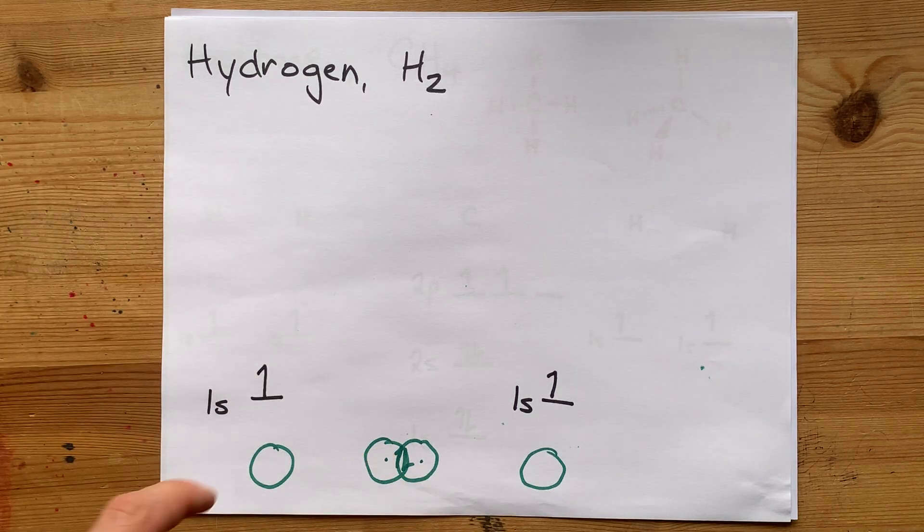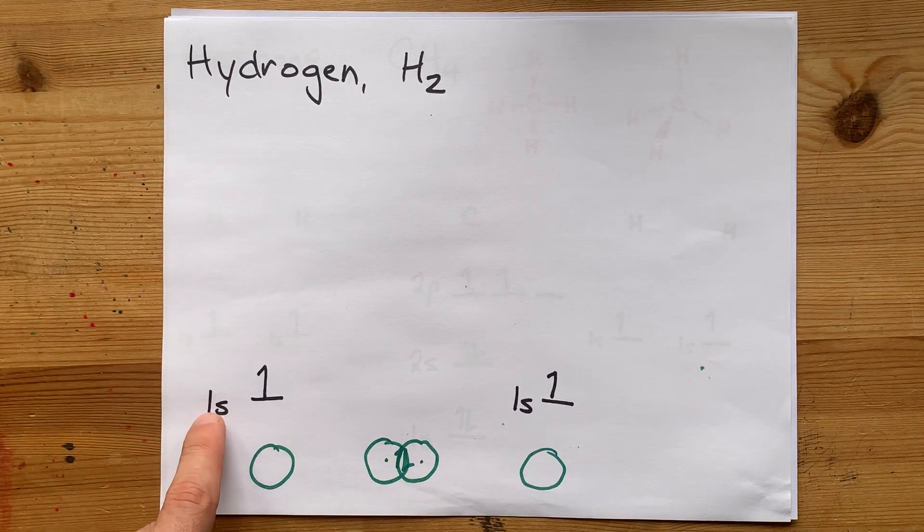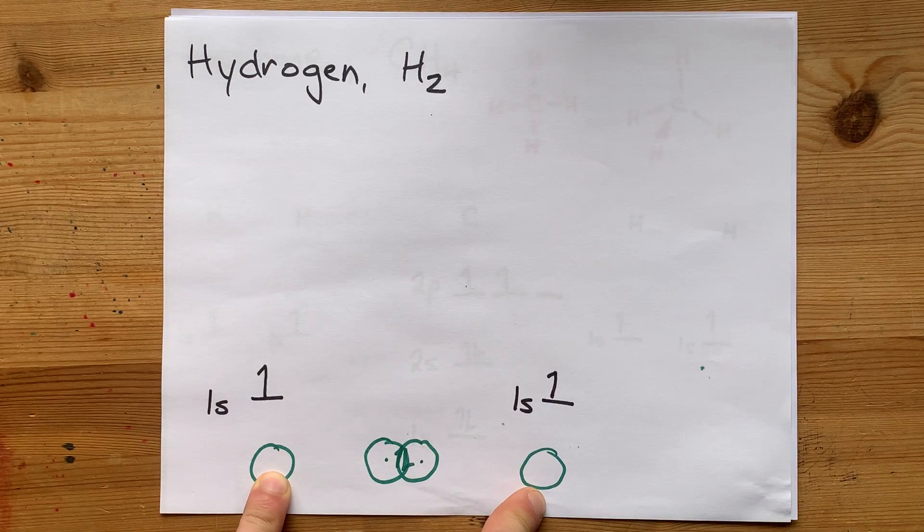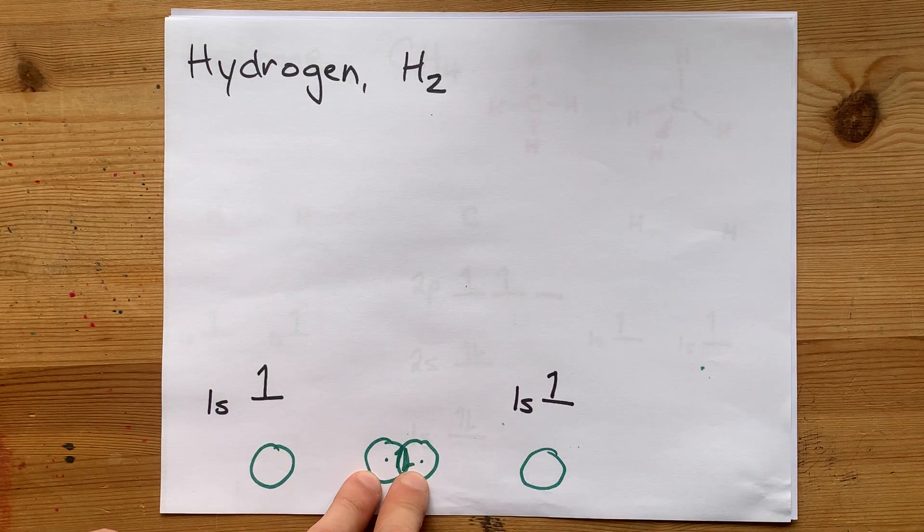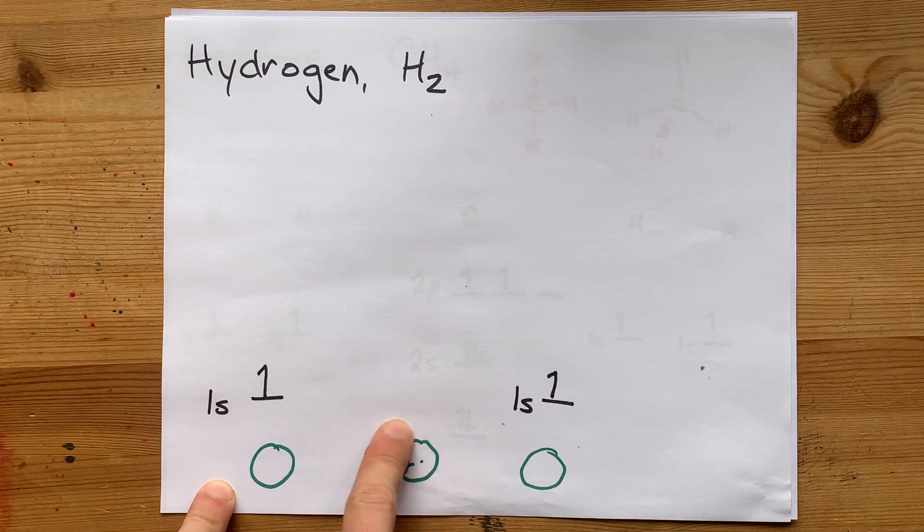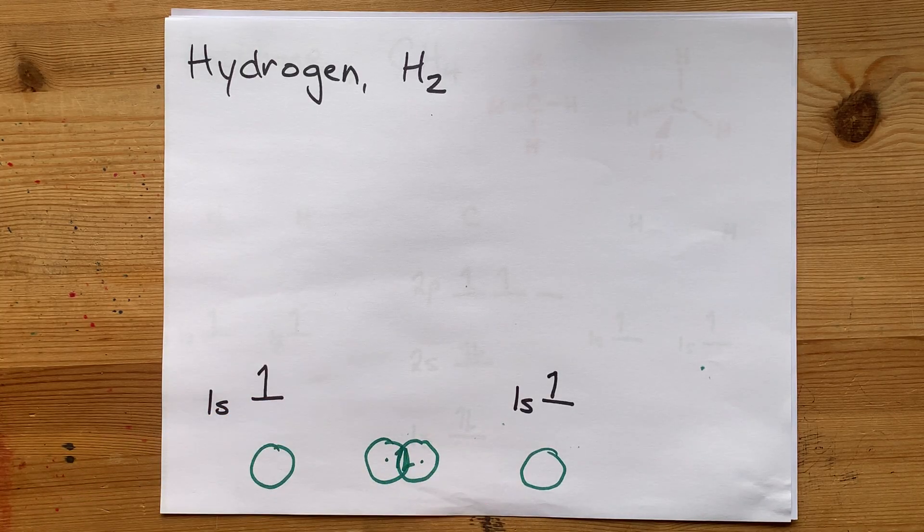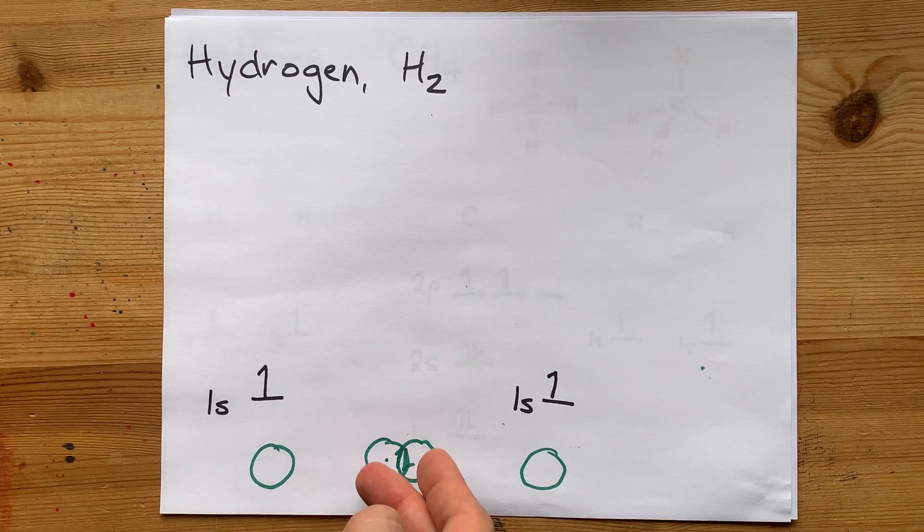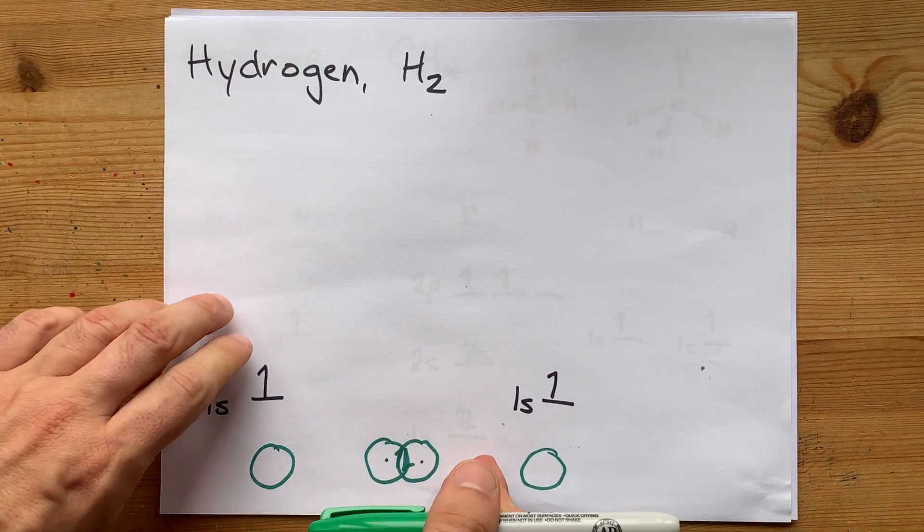Now, we've already shown that for hydrogen, the 1s atomic orbital overlaps with the 1s atomic orbital of another hydrogen atom. And they form this overlapped version with the unpaired electrons in the overlapped zone. Very nice.